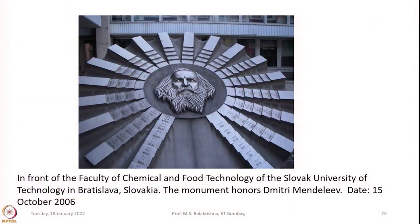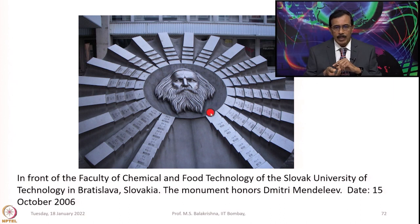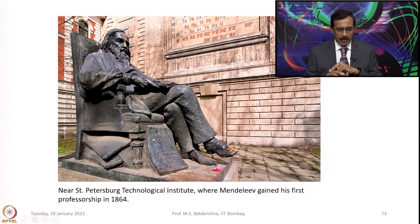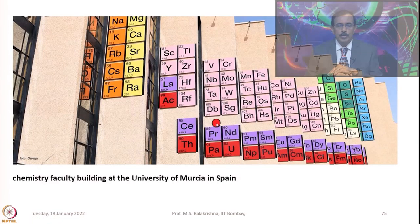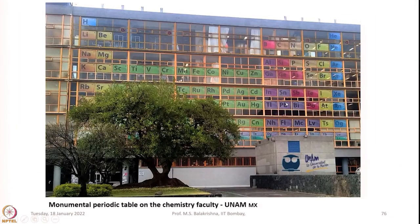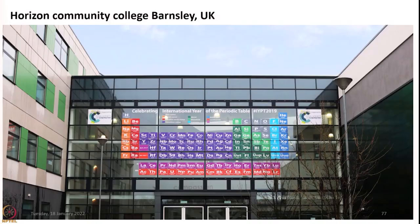Let me show you some monuments made in memory of the periodic table and its discoverers. In front of the Faculty of Chemical and Food Technology at Slovak University of Technology in Bratislava, Slovakia, there is a monument honoring Dimitri Mendeleev. Near St. Petersburg Technological Institute, where Mendeleev gained his first professorship in 1864, they have placed a statue of Mendeleev. A tower block is decorated with Mendeleev's periodic table in Tobolsk, Siberia, and the chemistry faculty building at the University of Murcia in Spain also features one.